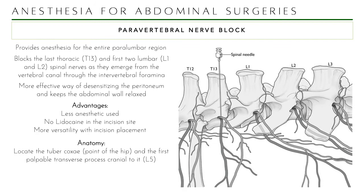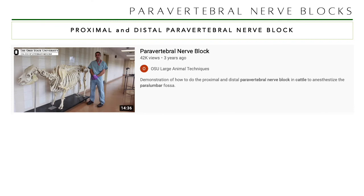For anatomy, locate the tuber coxae — the cranial part of the hip bone — and the first palpable transverse process cranial to it corresponds to L5. There are two ways to do a paravertebral nerve block: proximal and distal. Ohio State University has a very informative 15-minute video on this block. Watch it and focus on the questions I will list.